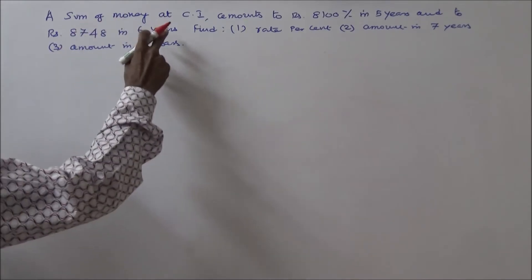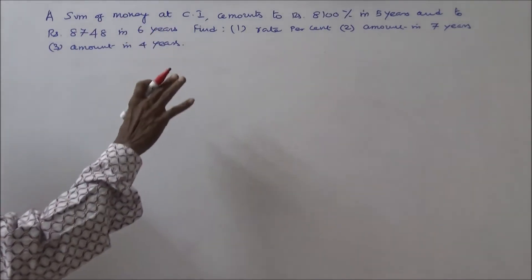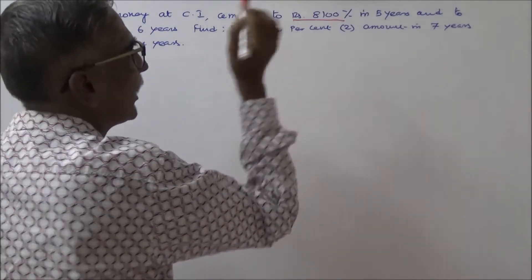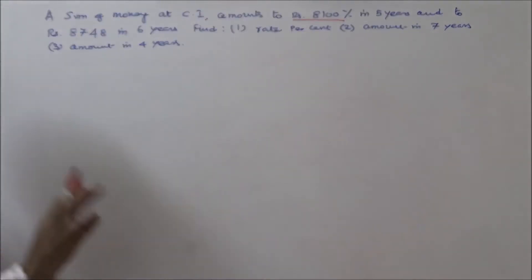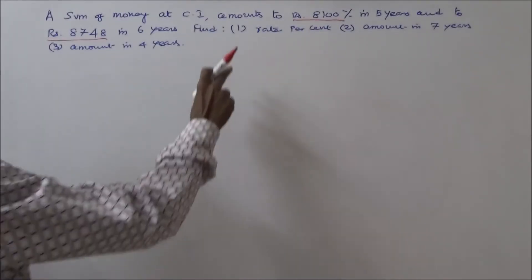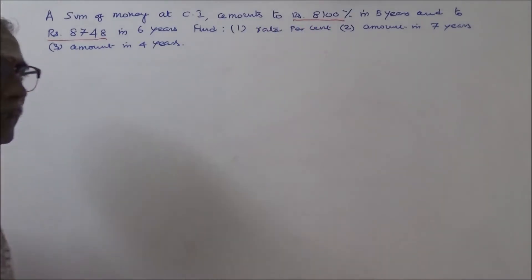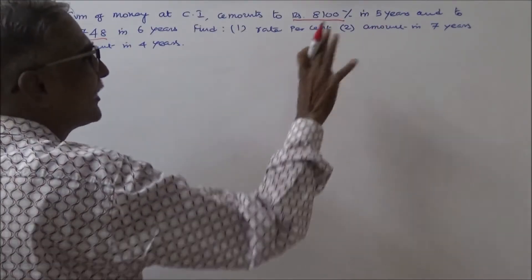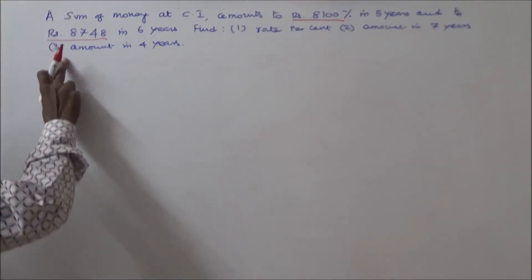A sum of money at compound interest amounts to Rs.8100 in 5 years and Rs.8748 in 6 years. The questions are: number 1, find the rate of interest; number 2, find the amount in 7 years; number 3, find the amount in 4 years.